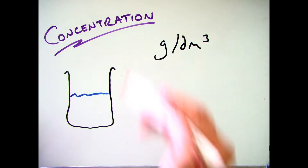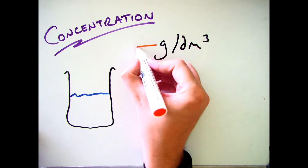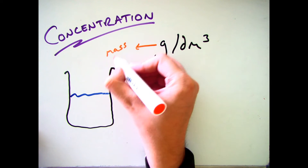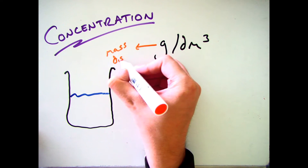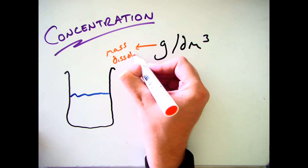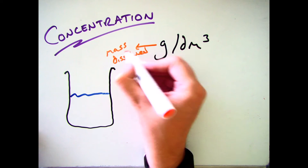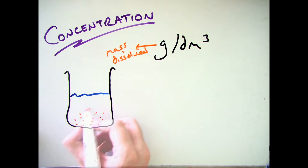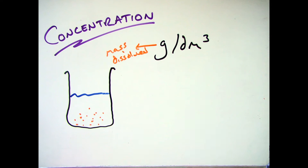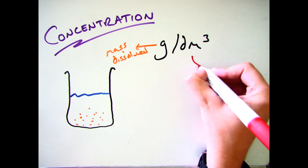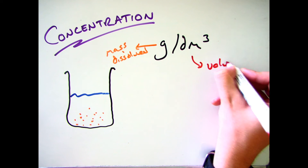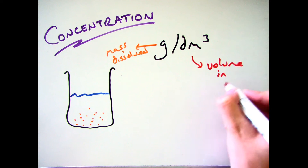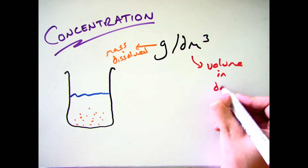When we talk about grams per decimetre cubed, the grams is the mass of the solute that we have dissolved — for example the mass of sugar dissolved in water — and the decimetres cubed is the volume of our liquid, so the volume of water that we dissolve that sugar in.